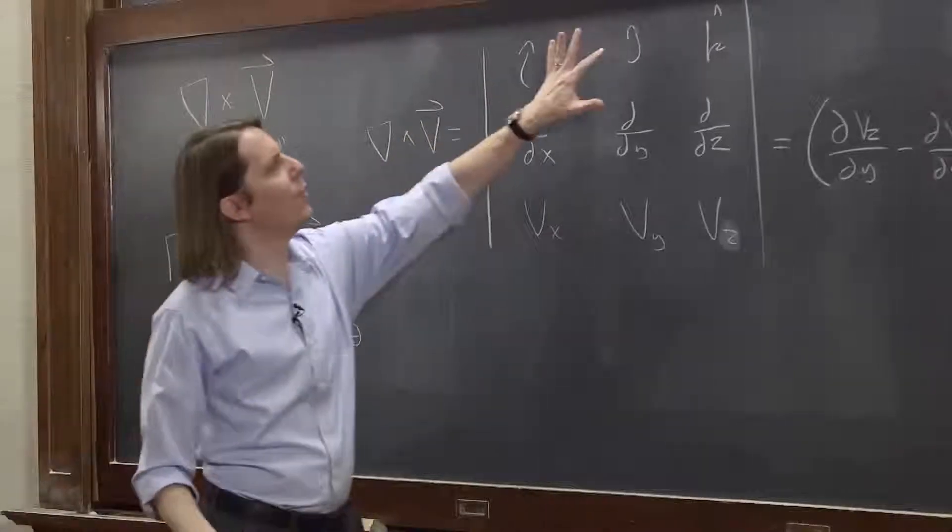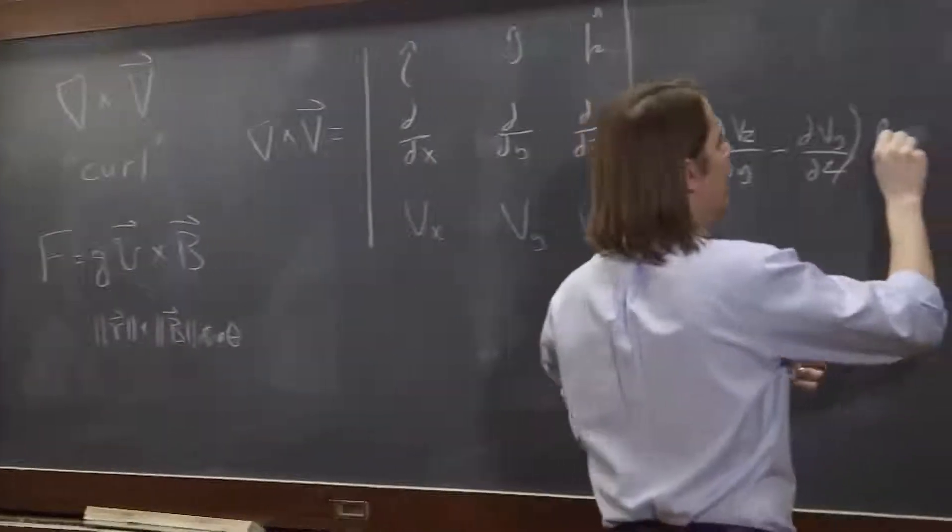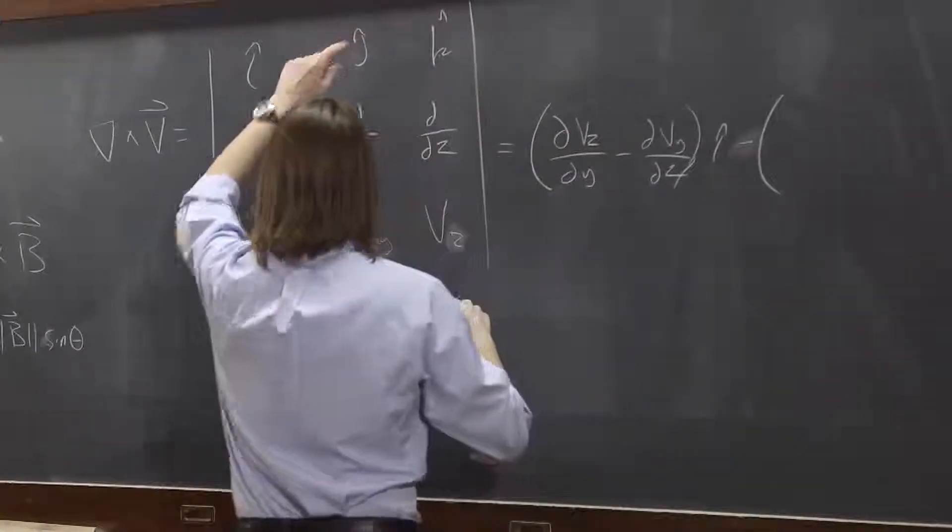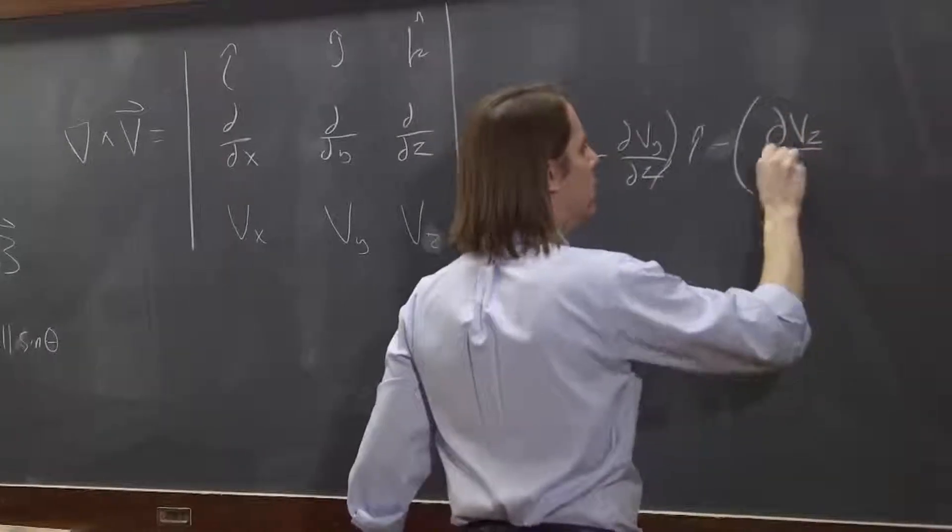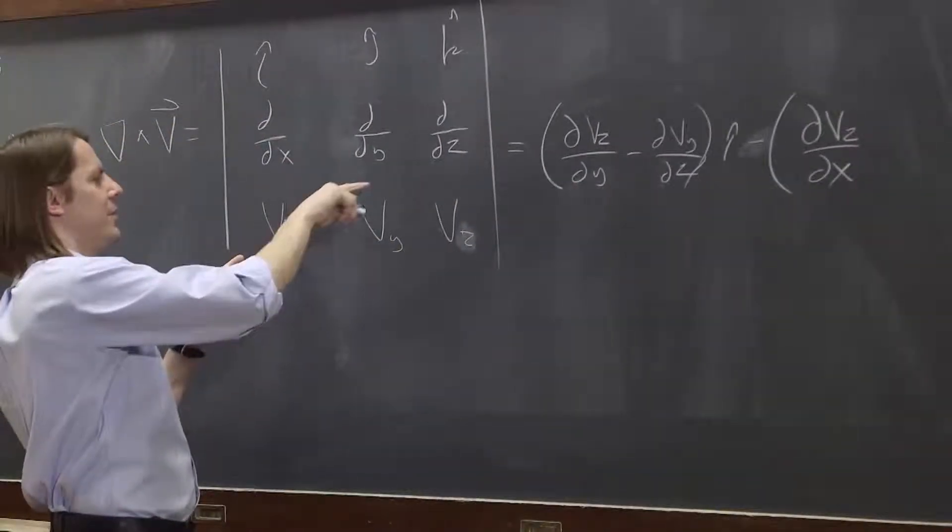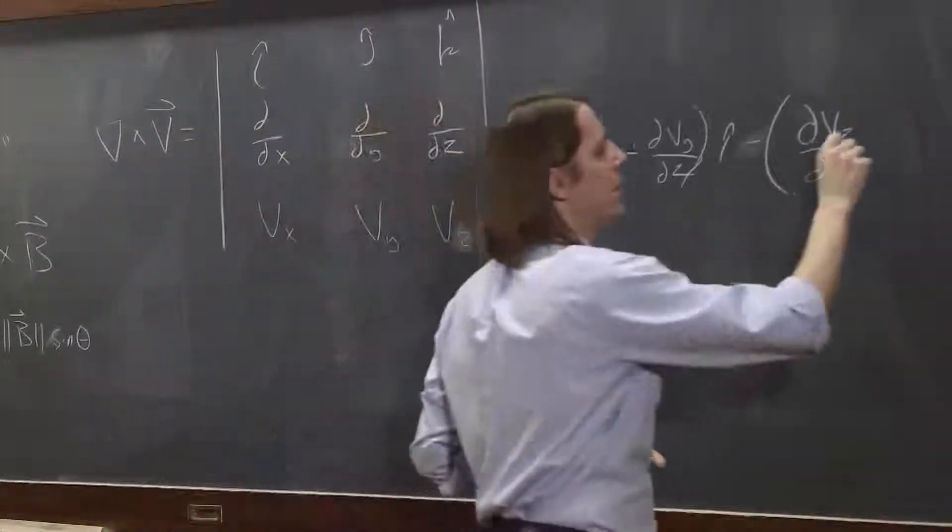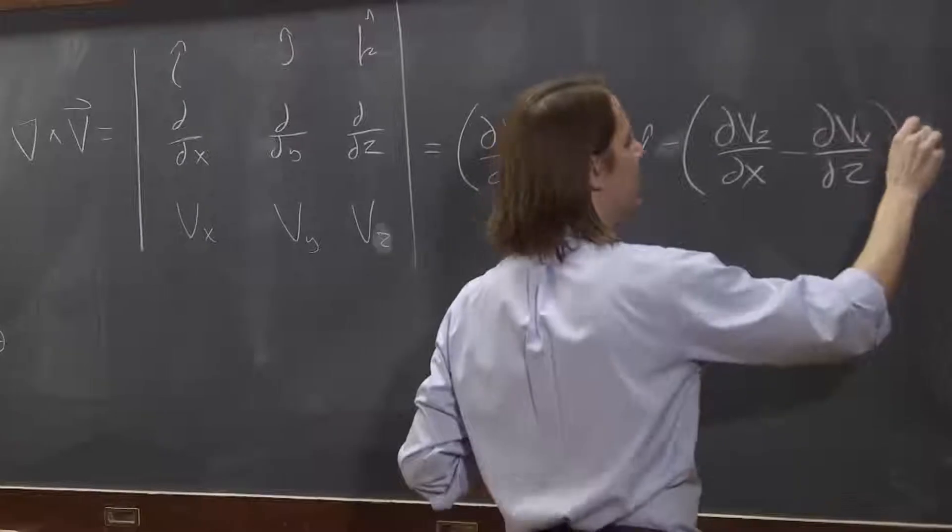And then when you move over one, you always have to go negative. So you'd say minus dv_z/dx and minus dv_x/dz. And that is j hat.